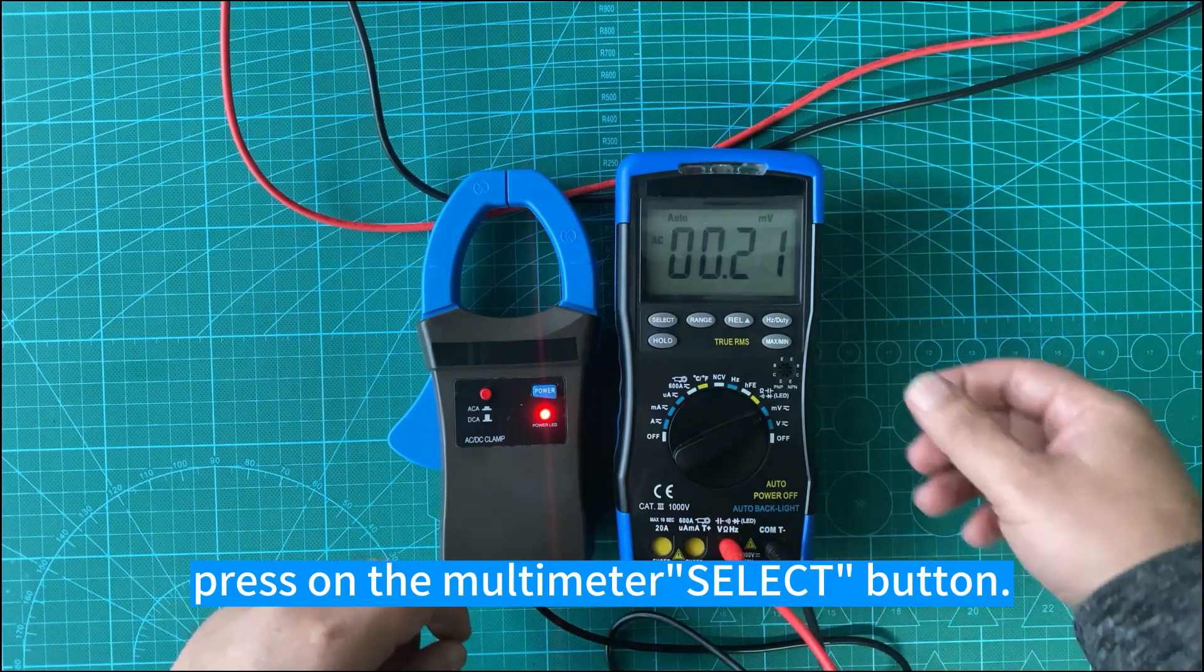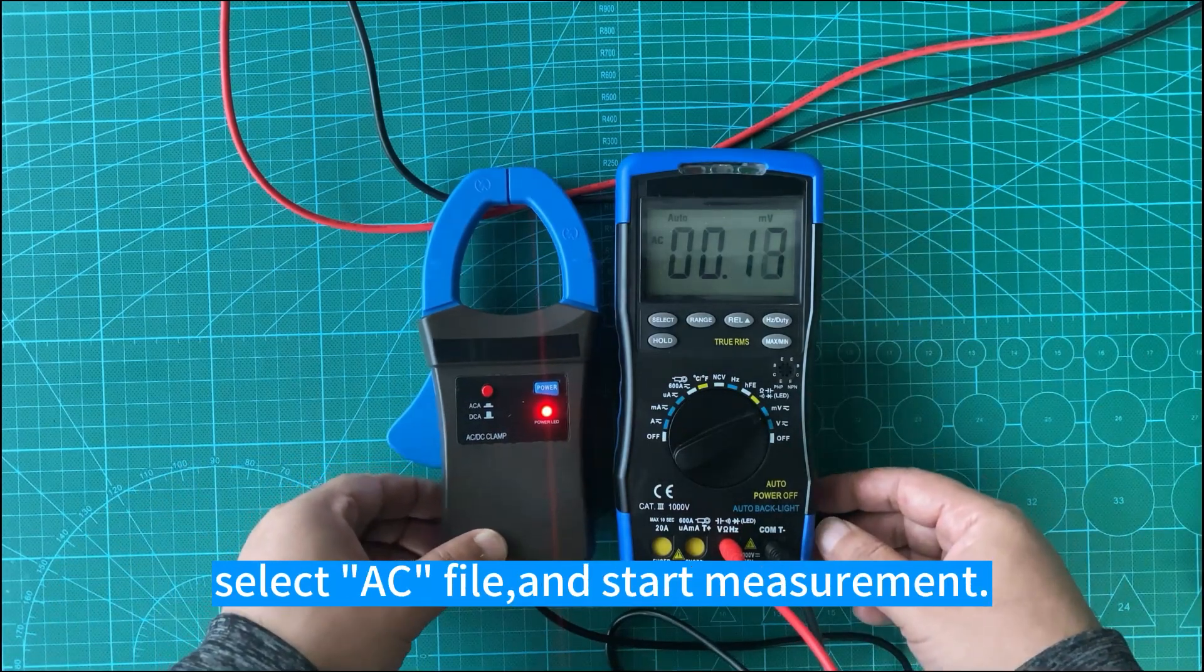Press on the multimeter select button, select the AC file, and start measurement.